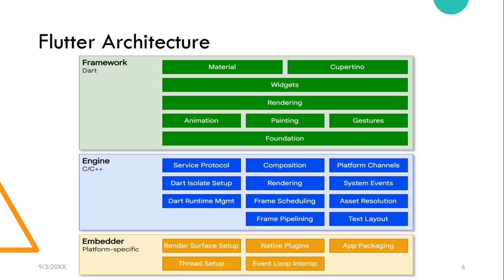The Flutter framework includes a rich set of platform, layout, and foundational libraries composed of a series of layers. Working from top to bottom: first, we have our foundation libraries — basic foundation classes and building block services such as animation, painting, and gestures that offer commonly used abstractions over the underlying foundation. The rendering layer provides an abstraction for dealing with layout. With this layer, you can build a tree of renderable objects and manipulate them dynamically, automatically updating the layout to reflect your changes.